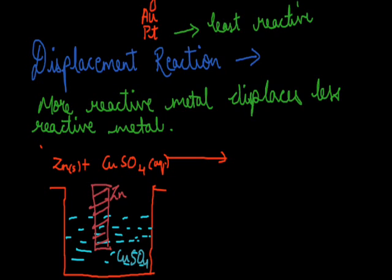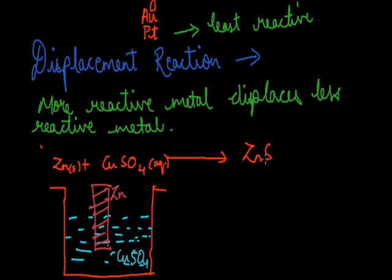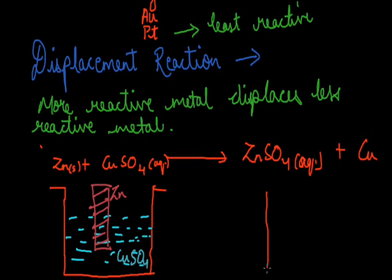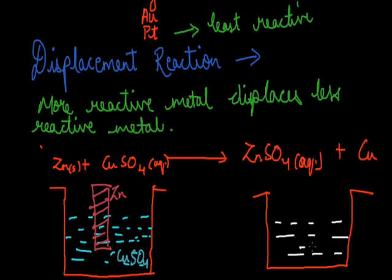What happens in this reaction is noteworthy. After some time, the blue color of the copper sulfate solution will change, and there will be formation of zinc sulfate solution. Copper will be replaced by zinc — there is formation of zinc sulfate and copper metal. Copper will be deposited at the bottom and there will be a solution of zinc sulfate. You can see the change in color.